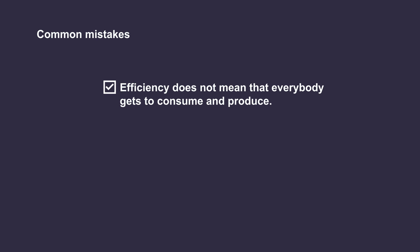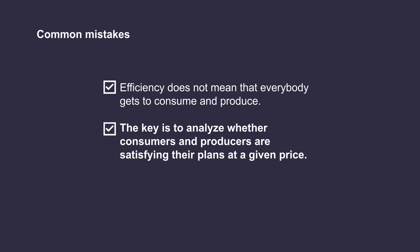Which are the most common mistakes? The main thing is to remember what aggregate means. We are not assuming that everyone behaves the same. Efficiency does not mean that everybody gets to consume and produce. The key is to analyze whether consumers and producers are satisfying their plans at a given price. Each price will establish who enters the market, whether as a consumer or a producer. That will depend on how much the consumer values the product, and what is the producer's capacity. For example, if I want to produce the headphones from the previous exercise but I have higher costs, my plans will be different than ABC's. I can put higher prices, which will lead to fewer buyers, or I can make less surplus.